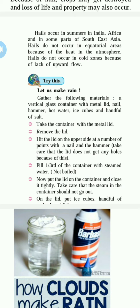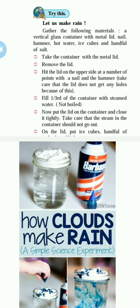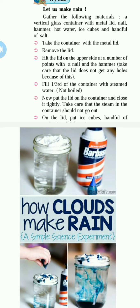Let us make rain. Gather the following materials: a vertical glass or container with a metal lid, a nail, a hammer, hot water, ice cubes, and a handful of salt. Take the container with the metal lid. Remove the lid, then hit the lid on the upper side at a number of points with the nail and hammer to make holes in the lid of the container. Fill one-third of the container with hot water — not boiling, just steaming. Now put the lid on the container.